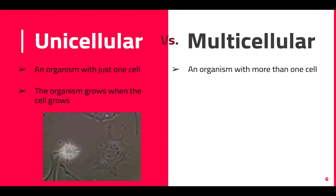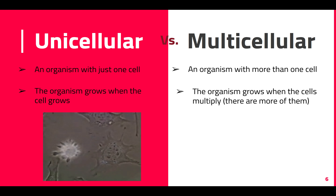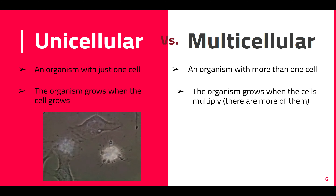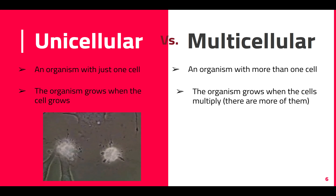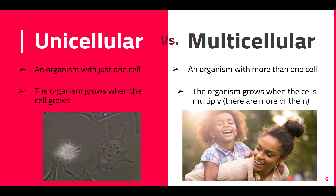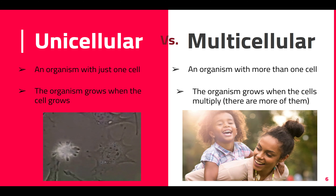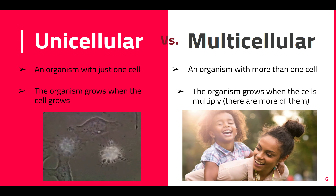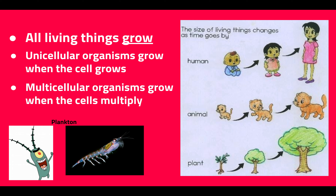Compare that to a multicellular organism — these are organisms with more than one cell. The organism grows when the cells multiply, so if you start off with five cells and now you have ten, the organism gets bigger, and with a thousand cells it gets bigger still. We are multicellular, plants are multicellular, animals are multicellular. Things that would be unicellular include some bacteria, amoeba, and plankton. All living things grow.